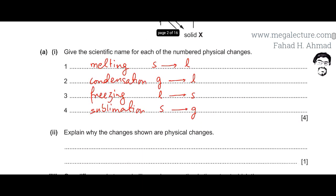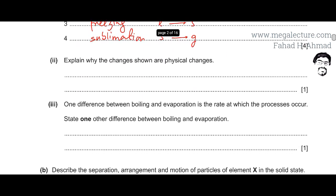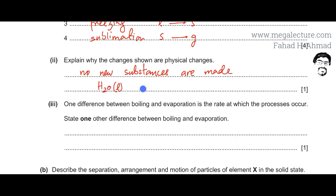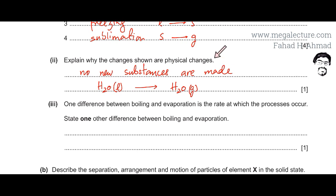Moving to the next part of the question: explain why the changes shown are physical changes. The reason is that no new substances are made. For example, if I take liquid water and boil it, H₂O is in liquid state, and it changes into steam, but it's still H₂O in gaseous state. You're only overcoming the intermolecular forces; you're not rearranging the bonds or making something different. H₂O remains as H₂O, so no new substances are made, which is why it's called a physical change.